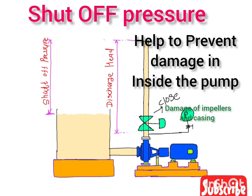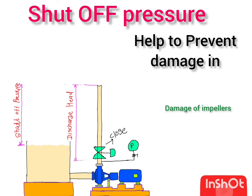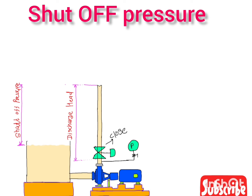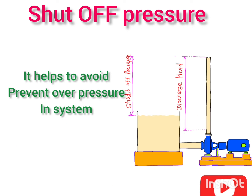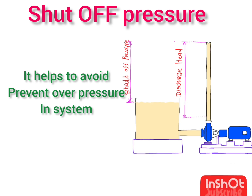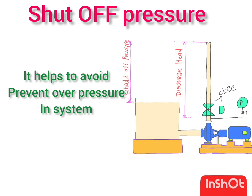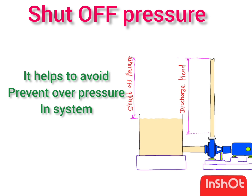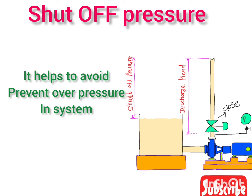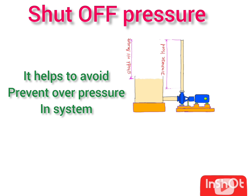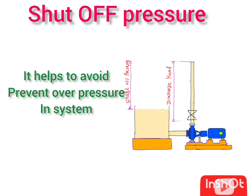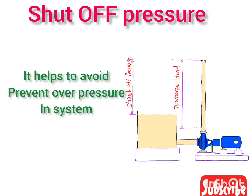The second benefit is that knowing the shut-off pressure helps you prevent overpressure in the system. For example, if you require 2 kg of pressure in your system and you select a pump with a 2 kg shut-off pressure, your system will not go beyond 2 kg pressure.